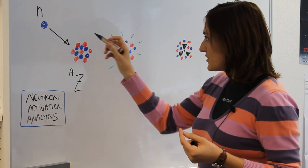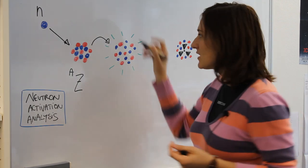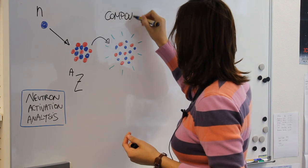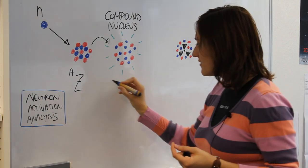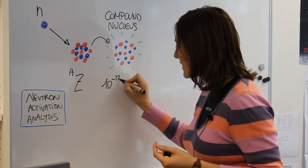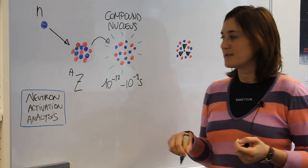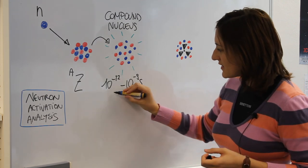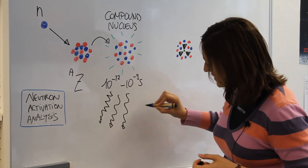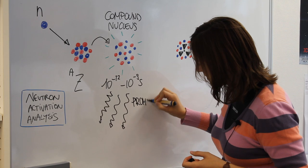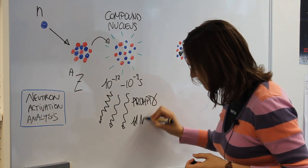After it received the neutron, it goes into an excited state that is also called compound nucleus that decays very quickly in a range of 10 to the minus 12 to 10 to the minus 9 seconds to the lowest energy state. In this transition it emits prompt gamma radiation that has a very high energetic range up to 11 mega electron volts.